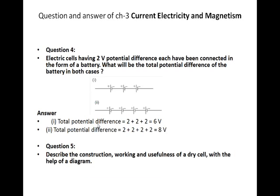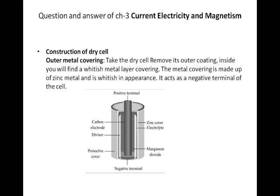Now question number 5: describe the construction, working and usefulness of a dry cell with the help of a diagram. So you have to explain the diagram of a dry cell. First of all you have to draw the structure of the dry cell — very important — and label it properly.